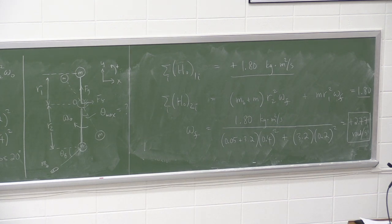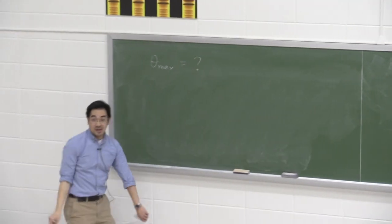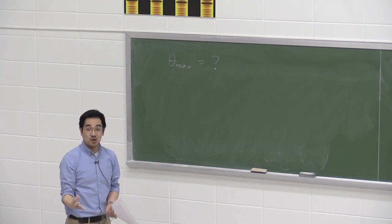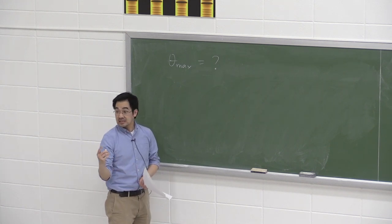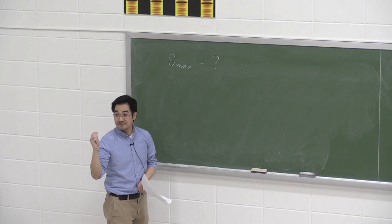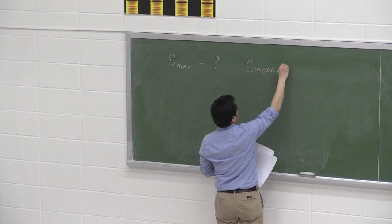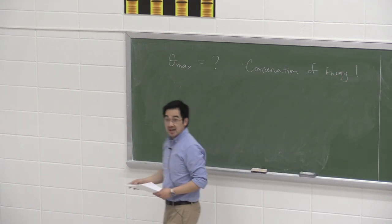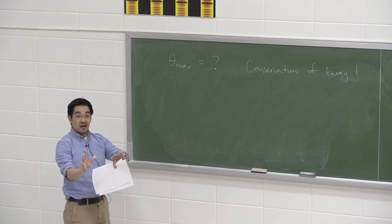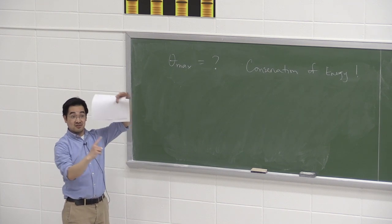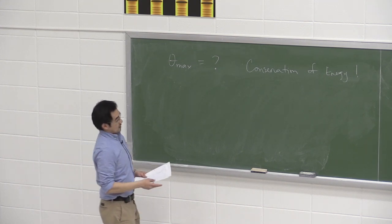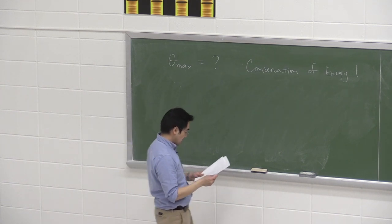For theta max, think of how we handled pendulums before. After the bullet embeds, the pendulum swings up against gravity. Use conservation of energy: T₁ plus V₁ equals T₂ plus V₂. Set the starting position as the datum with V₁ equals zero. At theta max the pendulum stops, so T₂ equals zero.